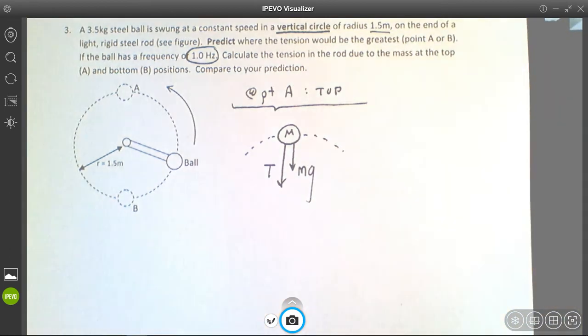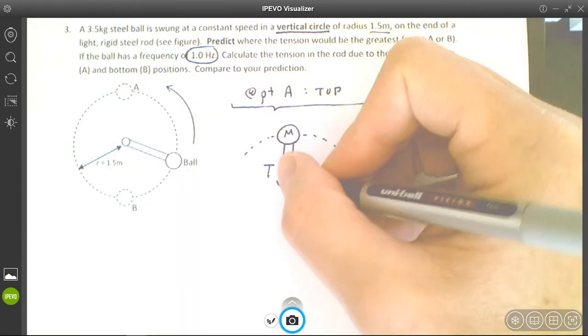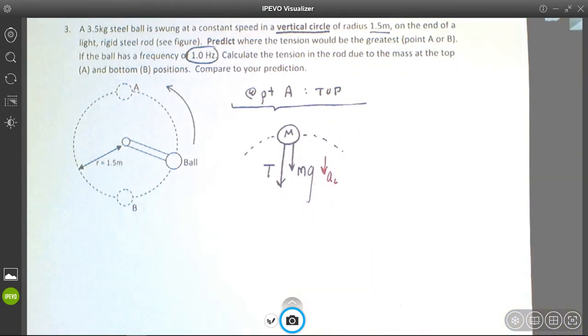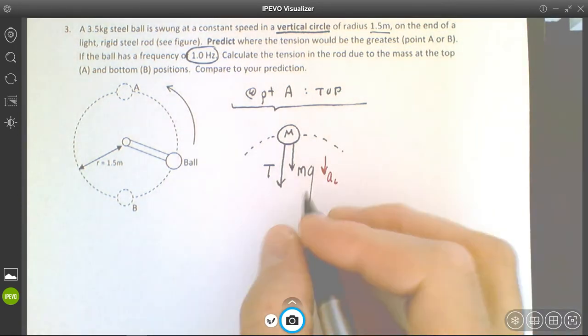The question is, which way is it accelerating? Of course, it's centripetally accelerating. It is always accelerating towards the center, so it's accelerating towards the center of rotation always, regardless of what's happening. Now we just write out Newton's second law.